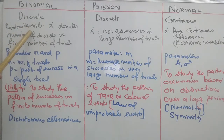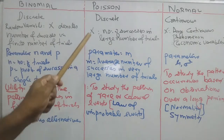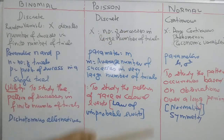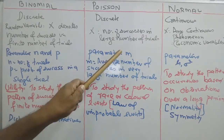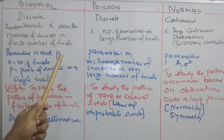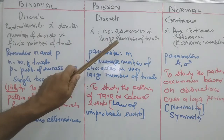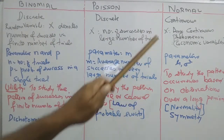In binomial distribution, the random variable X denotes the number of successes in a finite number of trials. In Poisson distribution, X is also the number of successes, but in a very large number of trials. In binomial, both number of successes and failures are known, but in Poisson only the number of successes is known since n is very large.